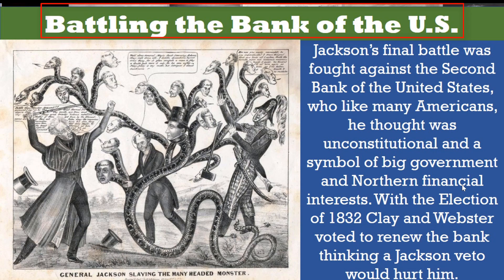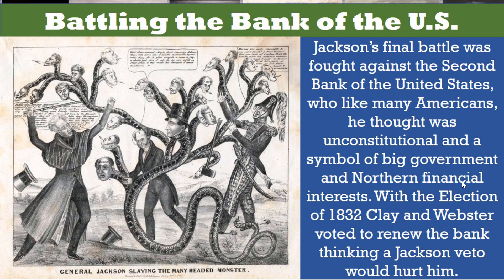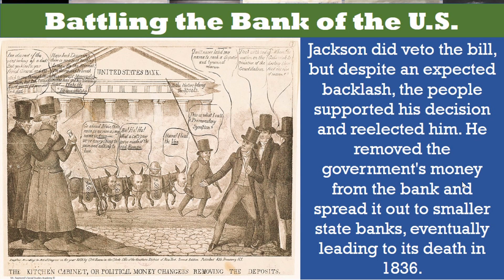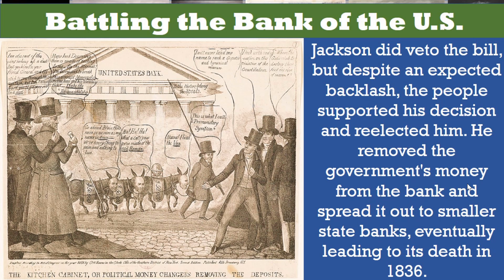Jackson's final battle was fought against the Second Bank of the United States. He, like many Americans, thought it was unconstitutional and a symbol of big government and northern financial interest. With the election of 1832 underway, Clay and Webster — both supporters of the bank — voted to renew its charter, thinking a Jackson veto would hurt him with the voters. Jackson did veto the bill, but despite an expected backlash, the people supported his decision and re-elected him. He removed the government's money from the bank and spread it out to smaller state banks, labeled pet banks, eventually leading to the death of the National Bank in 1836.